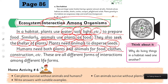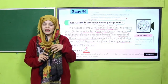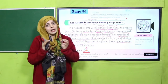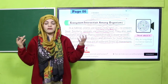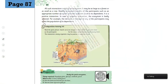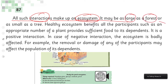Humans need both plants and animals for food, clothes, construction, etc. These are all different forms of interaction among different life forms. Animals depend on plants, plants depend on animals, and human beings depend on both plants and animals. All such interactions make up an ecosystem. An ecosystem can be as large as a forest or as small as a tree.